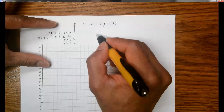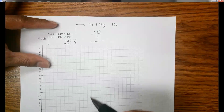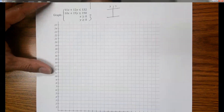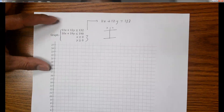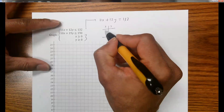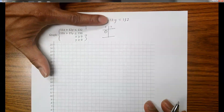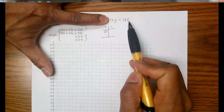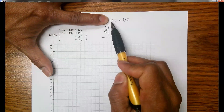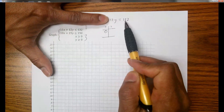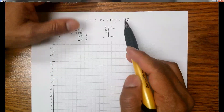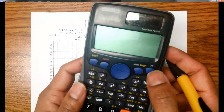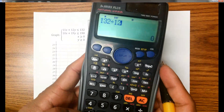To plot the graph of this line, you need two points. Let's find the x and y-intercepts. Starting with the y-intercept, meaning x is 0 — if x is 0, then 12y equals 132. Dividing both sides by 12 gives y equals 11. You can use a calculator: 132 divided by 12 equals 11.